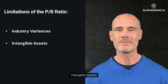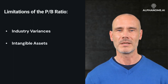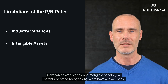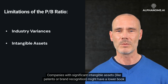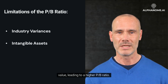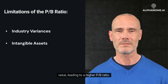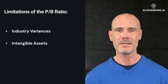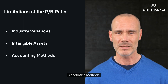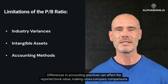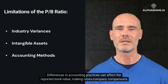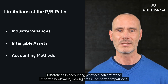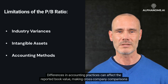Regarding intangible assets, companies with significant intangible assets — like patents or brand recognition — might have a lower book value, leading to a higher P/B Ratio. Additionally, differences in accounting practices can affect the reported book value, making cross-company comparisons challenging.